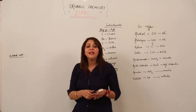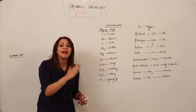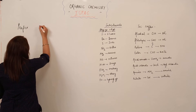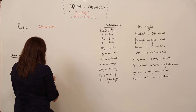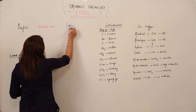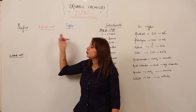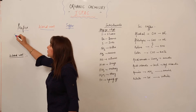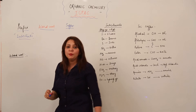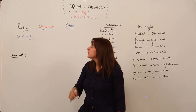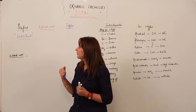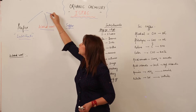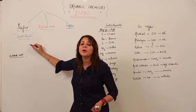According to IUPAC, the name of a compound consists of three parts. The first part is the prefix, the second is the word root, and the third is the suffix. The prefix is indicated by the substituents which are present in any organic compound. Don't panic — you will get to know what substituents are. For now, just remember that the prefix indicates the substituents present in the organic compound.